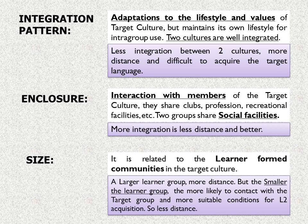The third social factor is size. It is related to the learner-formed communities in the target culture. A larger learner group means more distance with the target group. But the smaller the learner group, the more likely there is contact with the target group, creating more suitable conditions for second language acquisition.